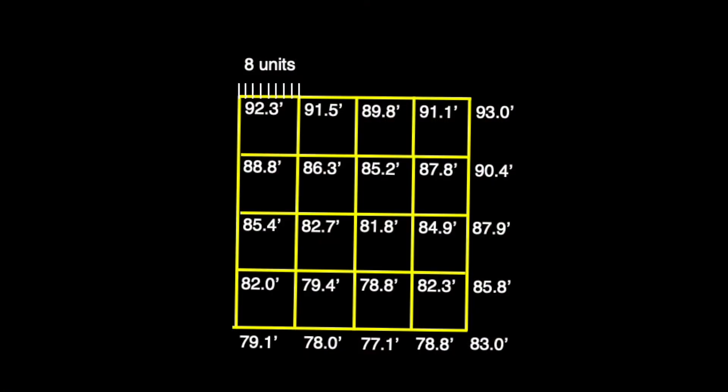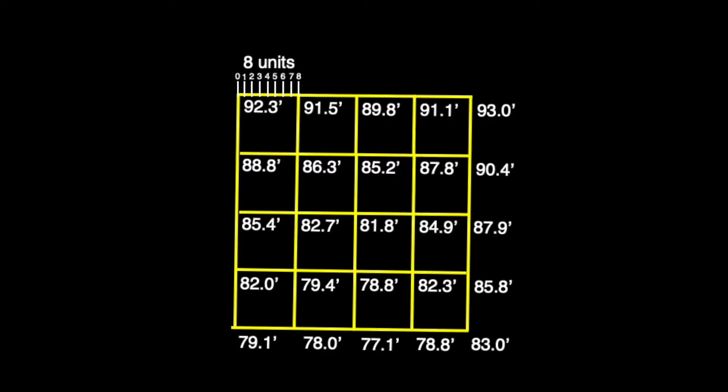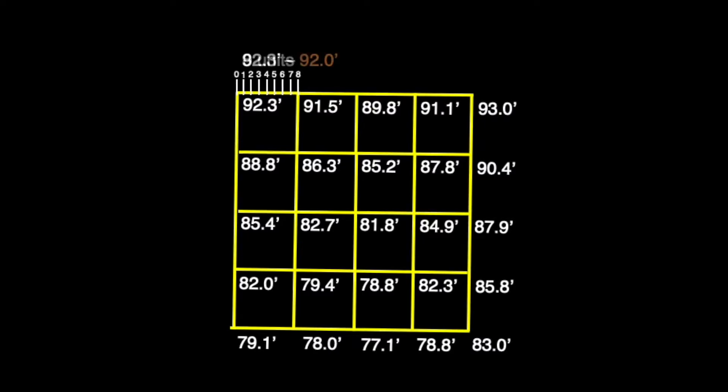With the line now divided into eight equal parts, all we need to do now is figure out on which one the 92 foot point rests.